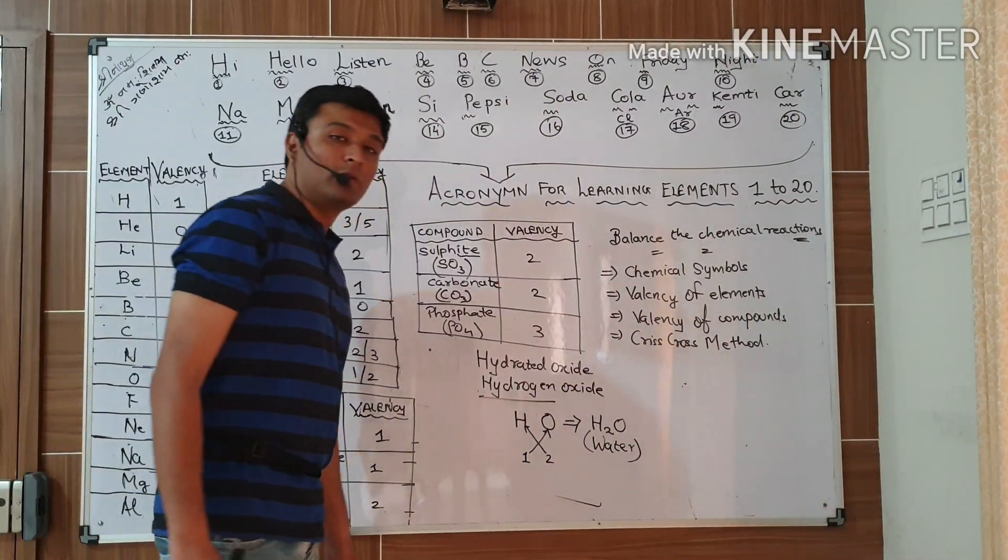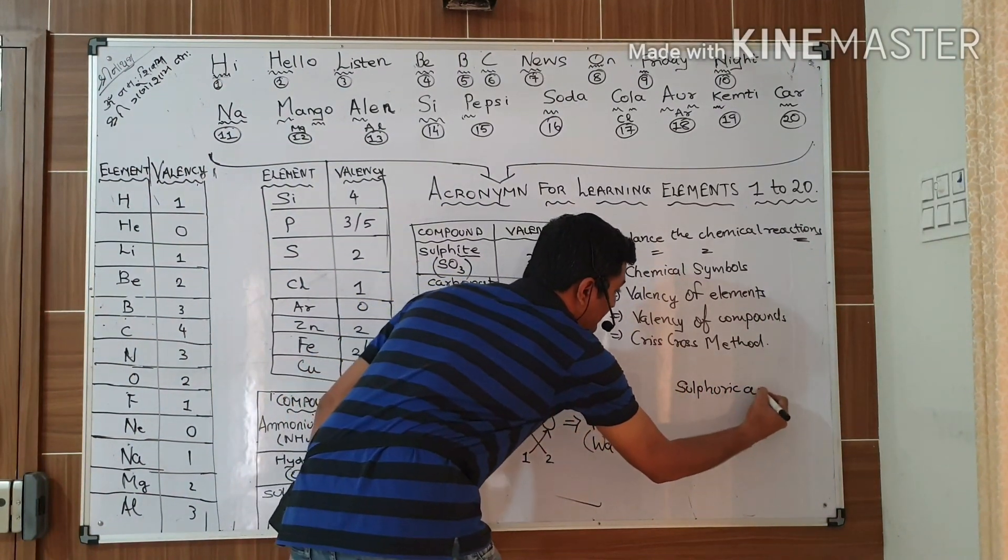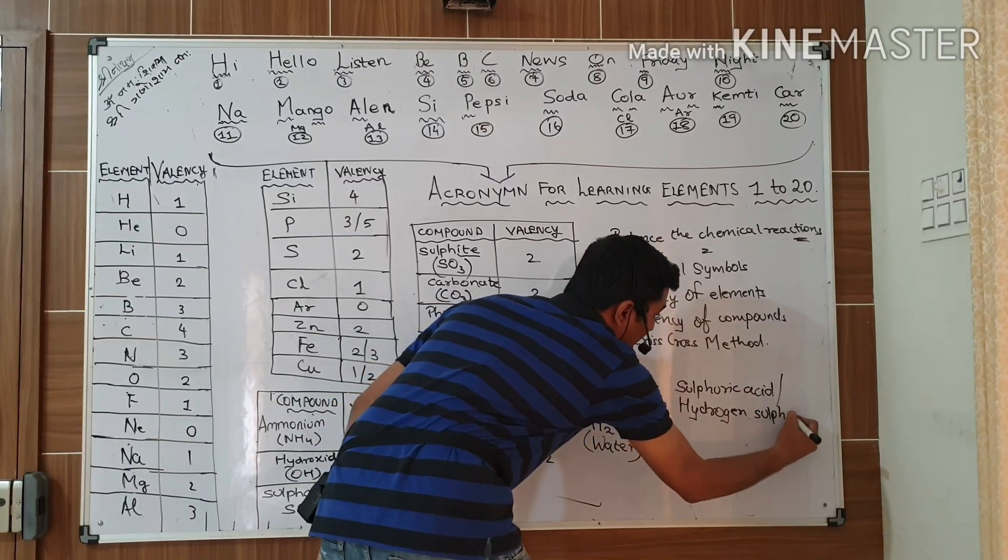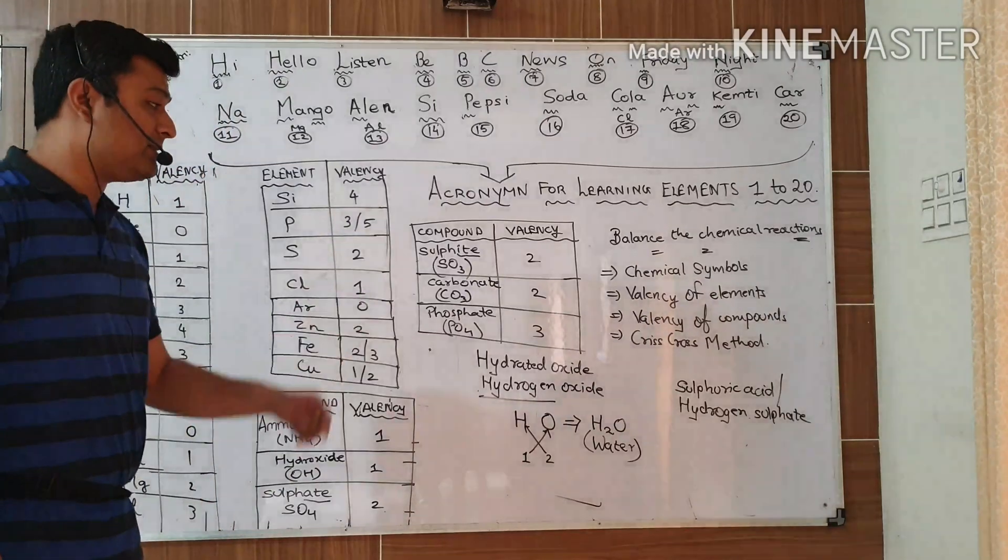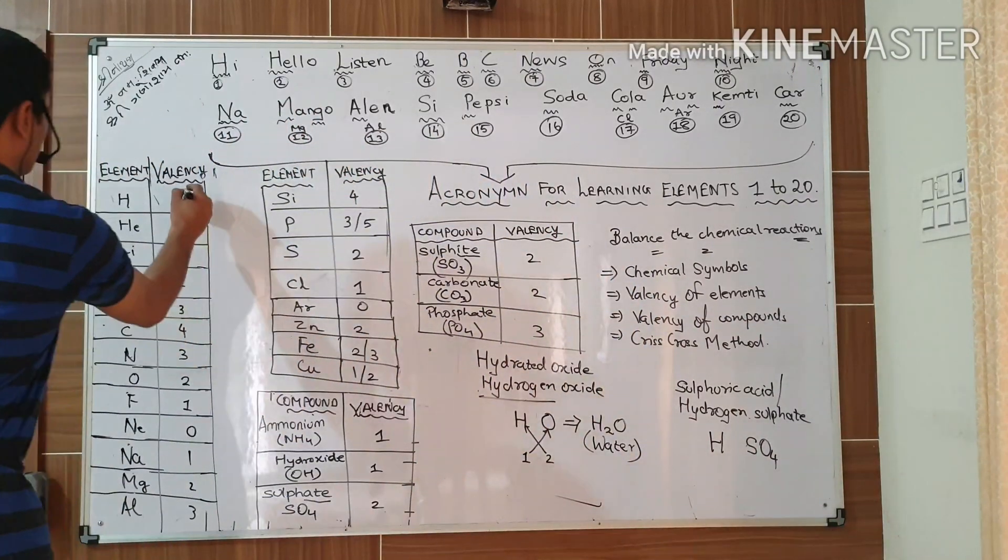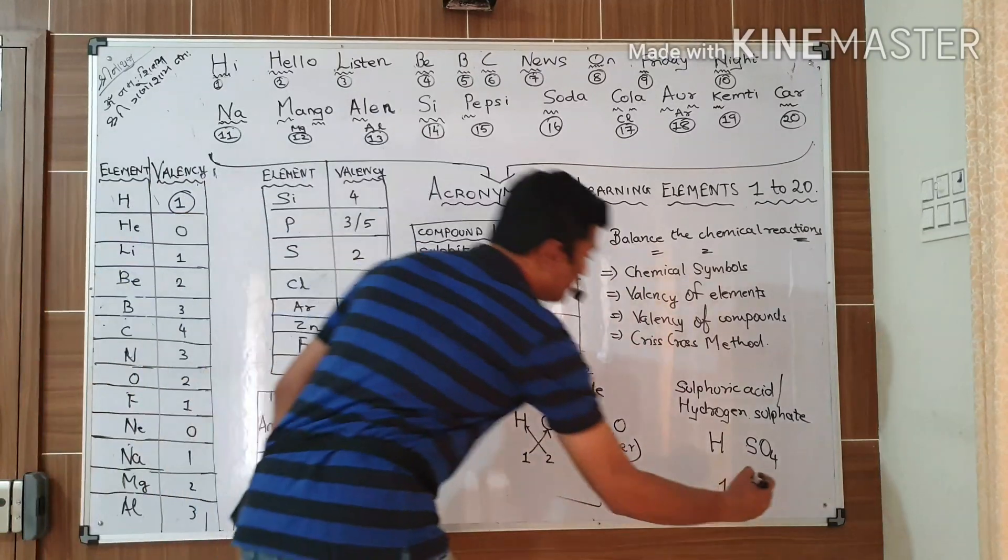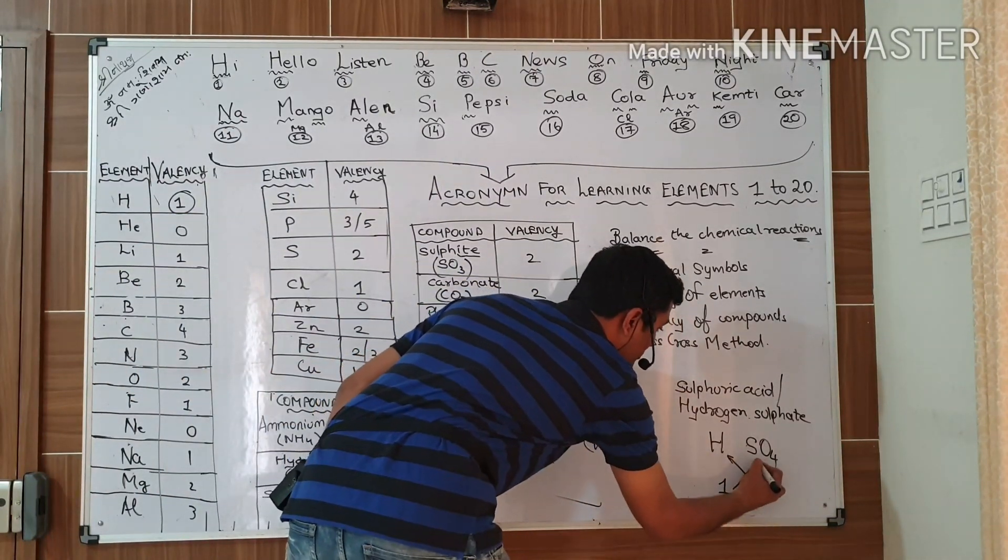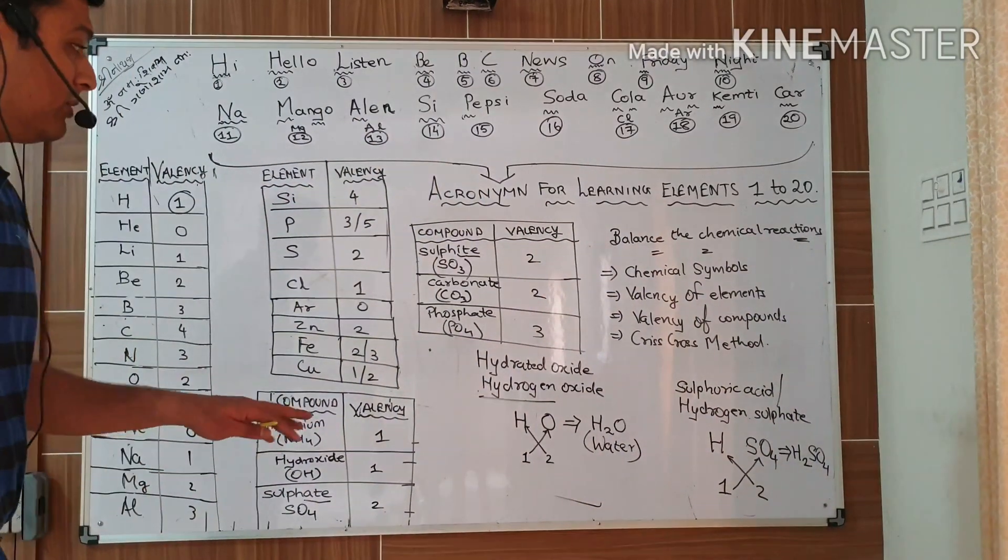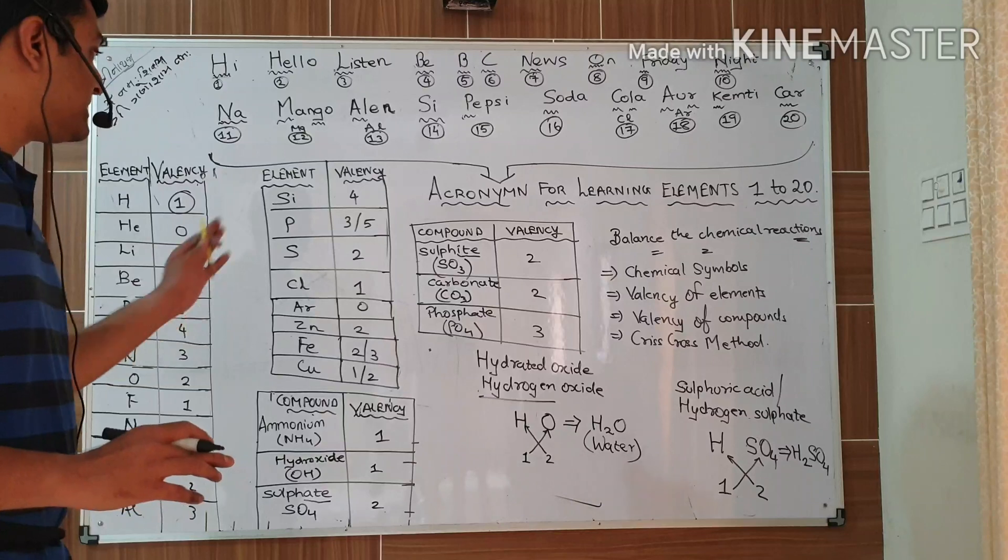This is criss-cross method which is used for forming any compounds. Second, if I am telling you give me the formula for sulfuric acid or another name hydrogen sulfate. Chemical symbol of hydrogen is H. Sulfate SO4. Valency of hydrogen is 1, valency of sulfate is 2. Give 2 to hydrogen, 1 to sulfate. This will change to H2SO4. It is quite simple to form a compound using valencies of the given elements.